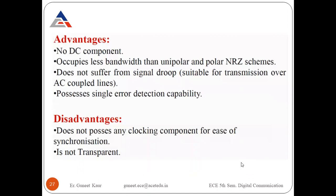Advantages of bipolar signaling: no DC component, requires less bandwidth than unipolar and polar NRZ, does not suffer from signal drop and is suitable for AC-coupled lines, and possesses single error detection capability since any violation of alternate mark inversion indicates an error. Disadvantages: no clocking information, synchronization problems remain, and it is not transparent.